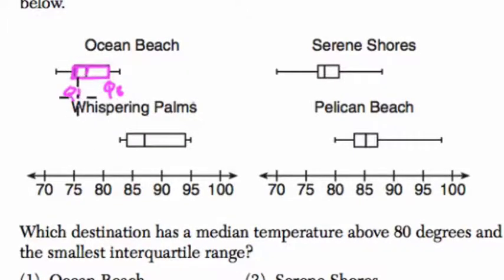So the smallest interquartile range is certainly not Whispering Palms. Look at this Whispering Palms rectangle - it's huge, so it's a huge interquartile range. Ocean Beach is also larger than Serene Shores and Pelican Beach. It's a little bit harder to tell here which one has a smaller interquartile range.